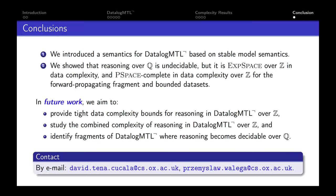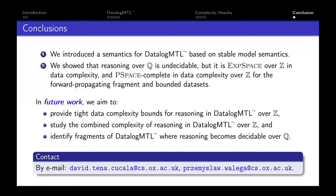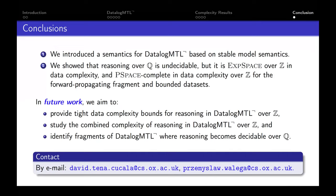To summarize, we introduced stable model semantics for DatalogMTL with negation, and showed that checking existence of a stable model is undecidable for the rational timeline, EXPSPACE over the integers in data complexity, and PSPACE-complete over the integers for the forward propagating fragment with bounded datasets. For future work, we aim to provide tighter data complexity bounds for the integers — we believe reasoning is PSPACE even in the general case — and to study combined complexity. Finally, since reasoning over the rationals is useful in practice, we'd like to find a fragment where reasoning becomes decidable over the rational timeline.